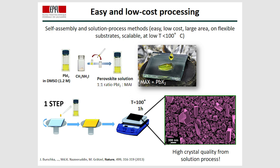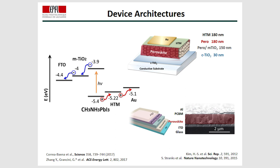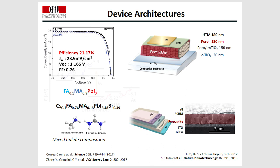Here I present some of the most efficient device architectures based on these materials. For example, using a compact layer of tin oxide and a mesoporous layer, we deposit the perovskite on top, use a hole transporting material — typically spiro — and gold as a metal electrode. It is possible to get efficiencies up to 21% if we combine different cations, for example formamidinium, methyl ammonium, and cesium, always keeping the 3D structure of the perovskite.